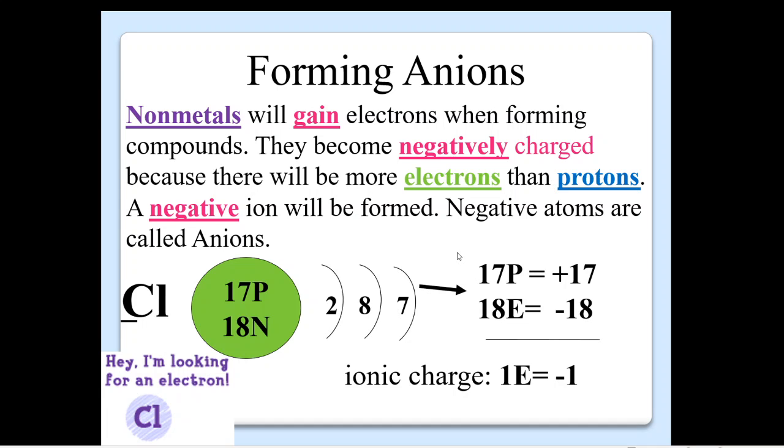The other type of ions we are going to talk about are called anions. So these are usually our nonmetals, the ones on the right side of the periodic table. And they will usually gain electrons, because that's the fastest way to a noble gas, when forming compounds. And they become negatively charged, because there will be more electrons than protons. So a negative ion will be formed, and we call negative ions anions. So an, that prefix, means not to have it or minus it. And so it just means to be negative here in chemistry.